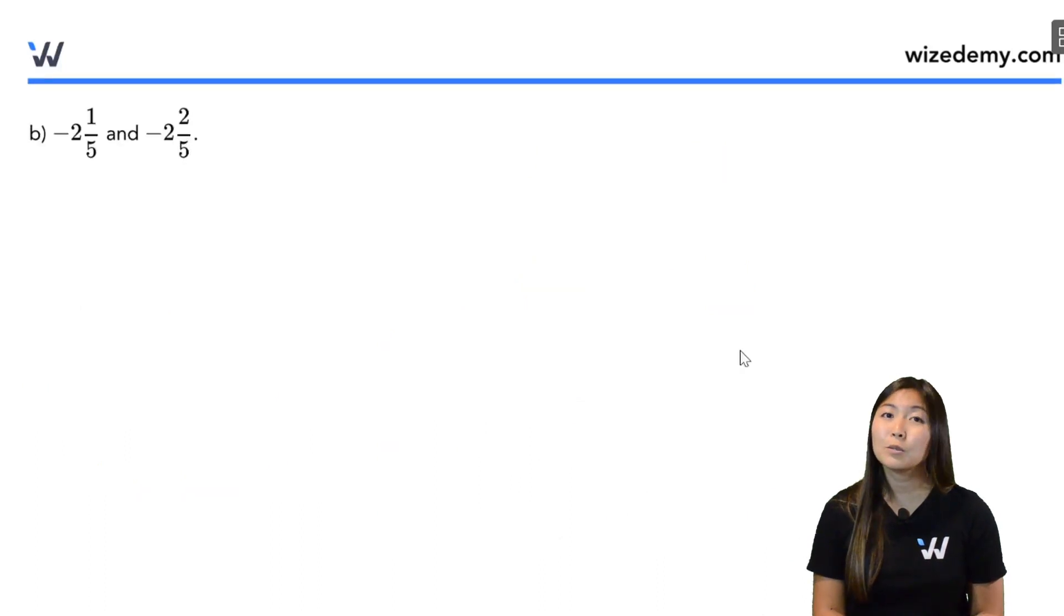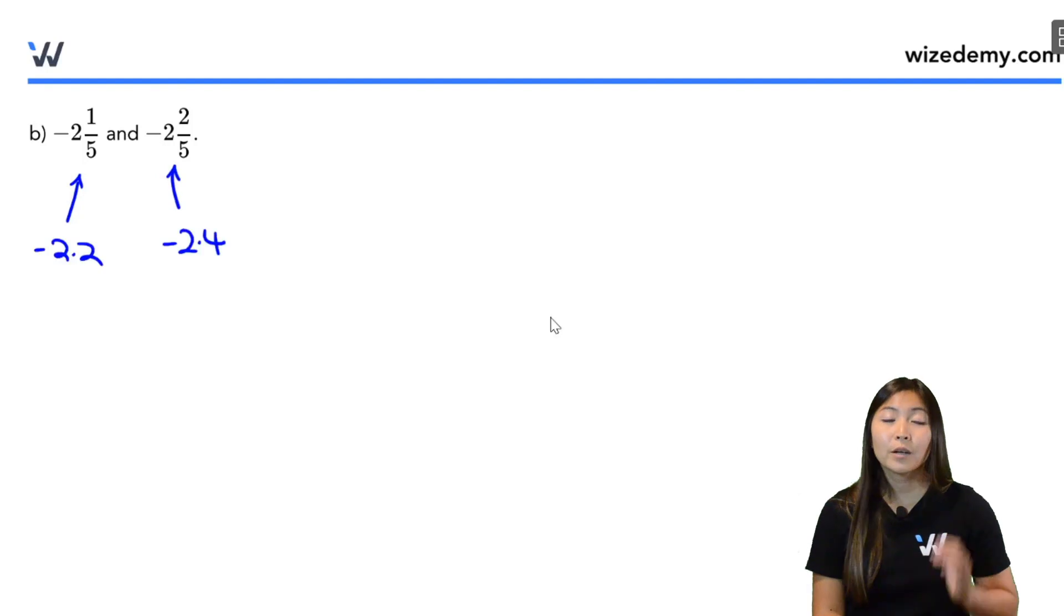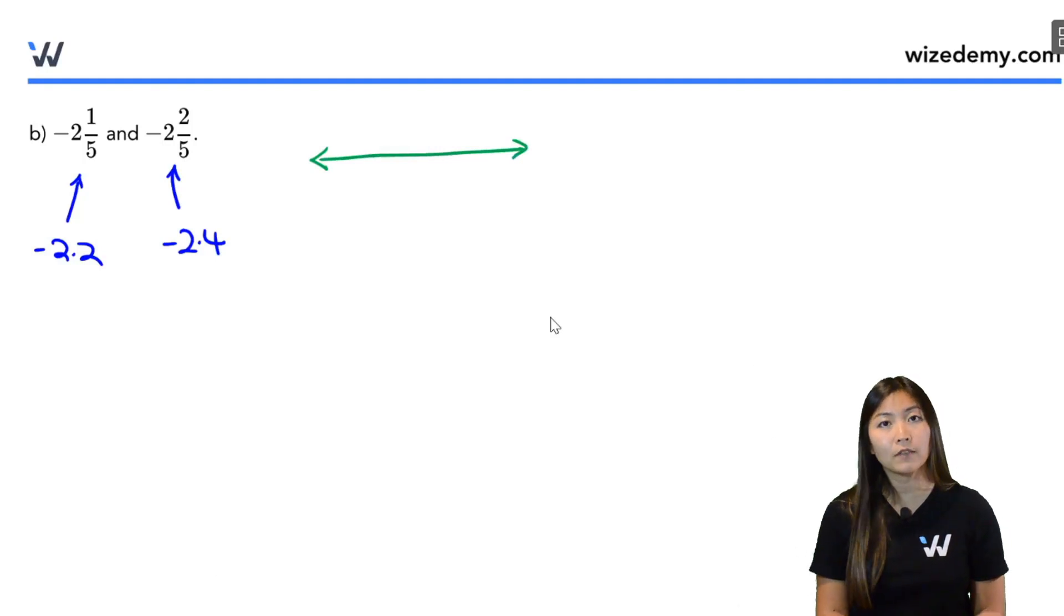All right in part B we want to do the exact same thing except this time they're negative so just be a little careful with that. So convert these two rational numbers into decimals. Okay, now that we have our decimals, be careful because they are negatives, we might want to use a number line. Remember when it comes to negative decimals, negative integers, the bigger the number part looks the smaller it actually is, meaning more to the left of the number line it is. So 2.4 looks bigger than 2.2, so negative 2.4 is going to be to the left of negative 2.2.